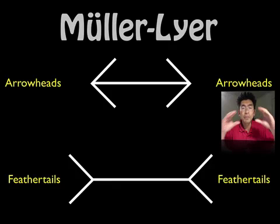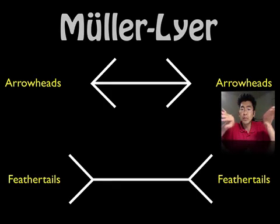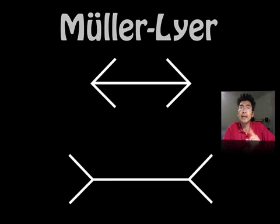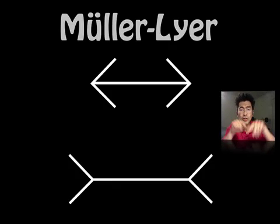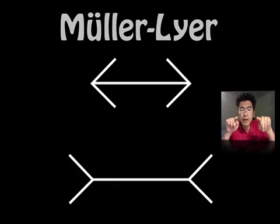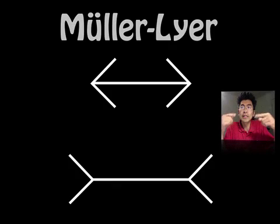Why do we perceive the arrowheads as shorter than the feather tails? Even though each of these lines casts the same retinal size image, they are still being perceived as different lengths due to the endings.